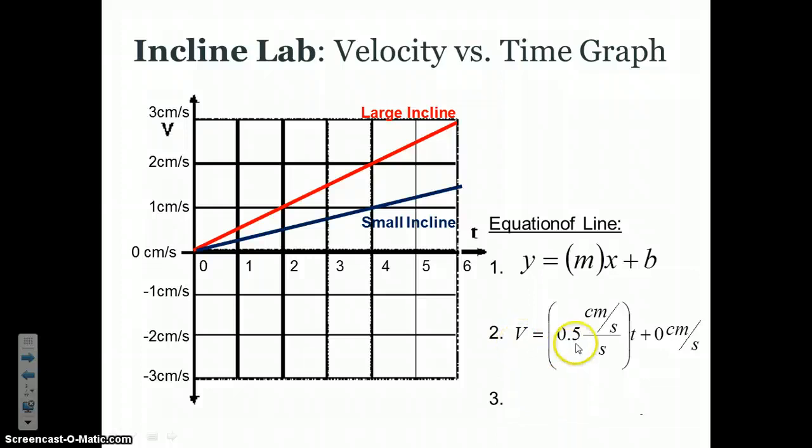So the equation looks something like this. Velocity, or V, is equal to 0.5 centimeters per second per second, multiplied by time, plus 0 centimeters per second. The slope is a half a centimeter per second every second. Because if you start at 0, in one second of time, the increase in velocity is a half a centimeter per second. So it's half a centimeter per second for this one second.